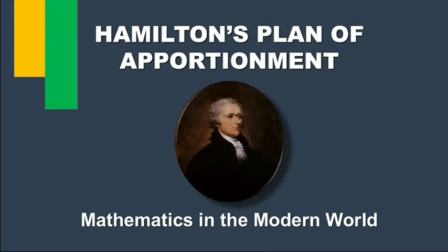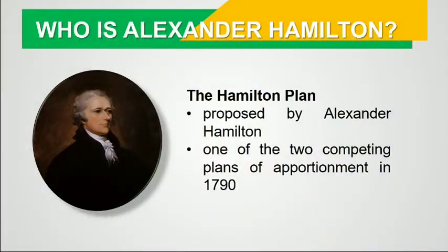This method was proposed by Alexander Hamilton and was one of the two competing plans of apportionment in 1790. The steps are very easy to follow, and I'm very confident that you will be able to follow them as demonstrated. So, what are the steps of Hamilton's plan of apportionment?